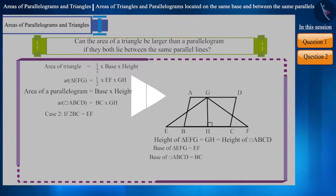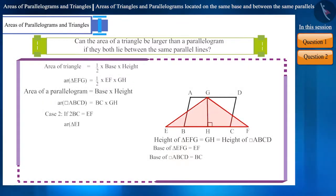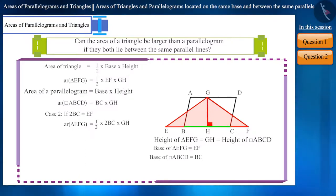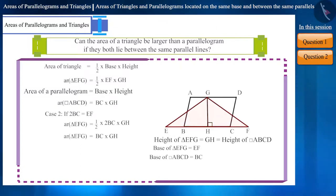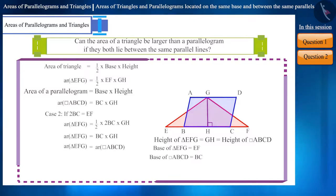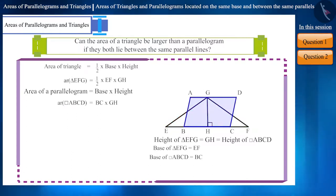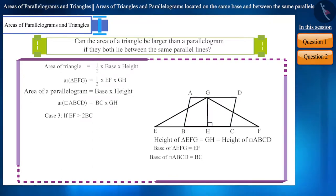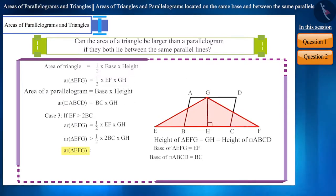Pause the video and think. The area of the triangle is equal to half multiplied by 2BC multiplied by GH, which would be BC multiplied by GH. In this case, the area of the triangle will be equal to the area of the parallelogram. But what will happen if the measurement of the base of the triangle is more than twice the measurement of the base of the quadrilateral? In this case, the area of the triangle will be more than the area of the quadrilateral.